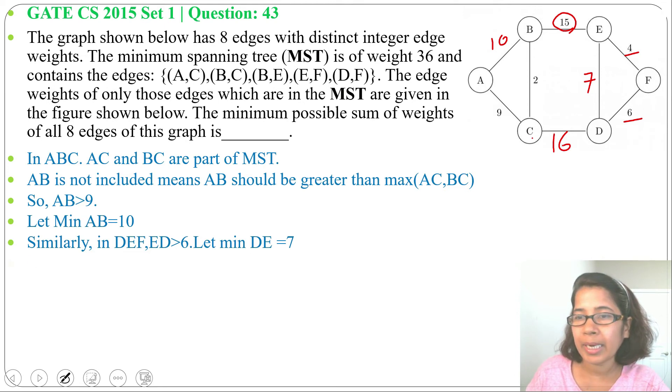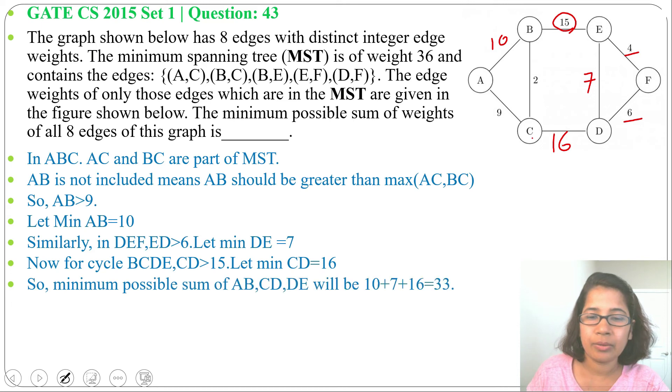Now sum of AB, CD, DE equals to 10 plus 7 plus 16, it's 33. And minimum spanning tree weight given is 36. So total weight will be 33 plus 36, it's 69.